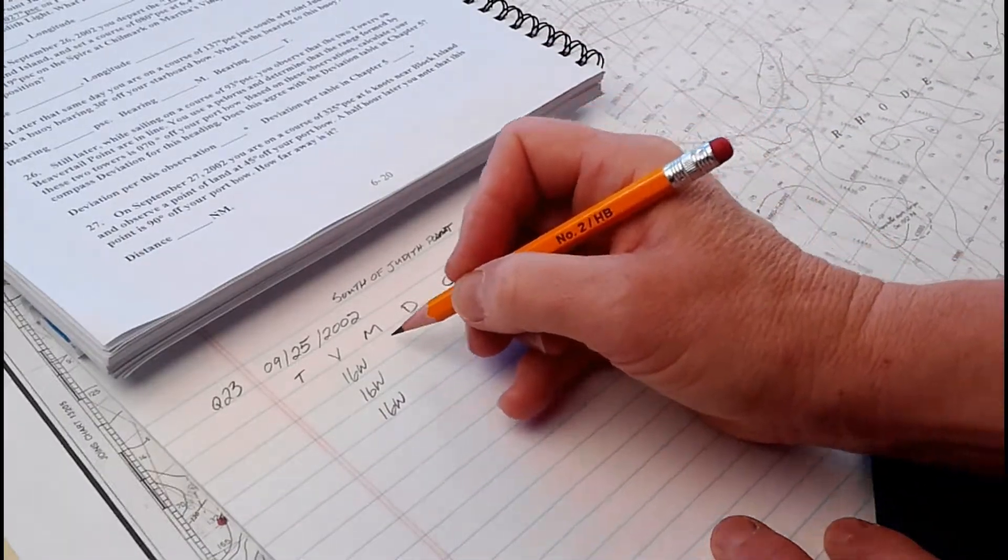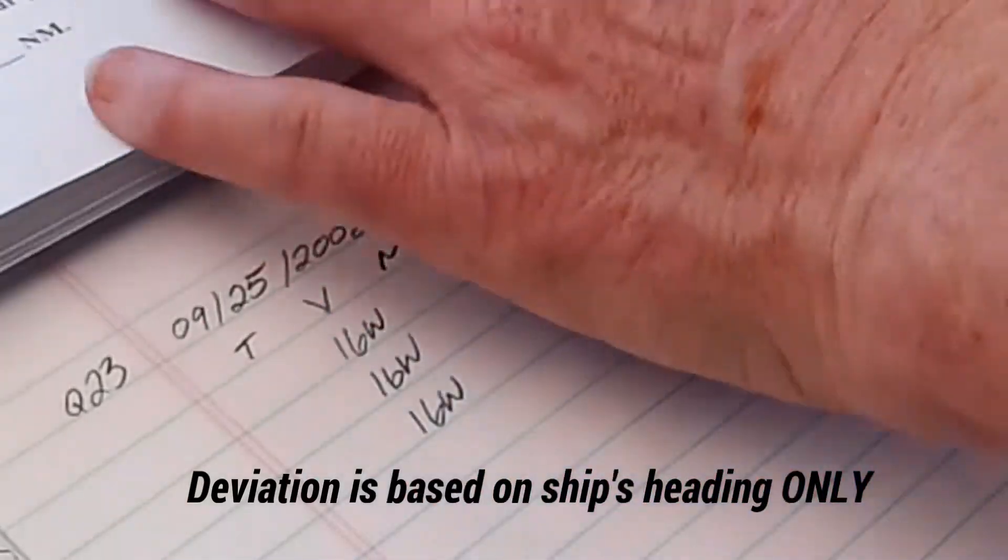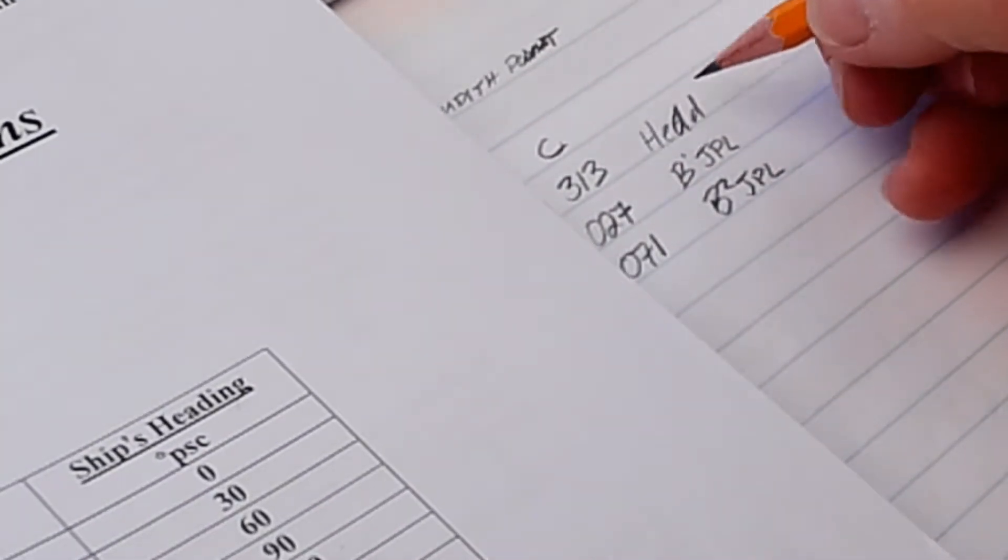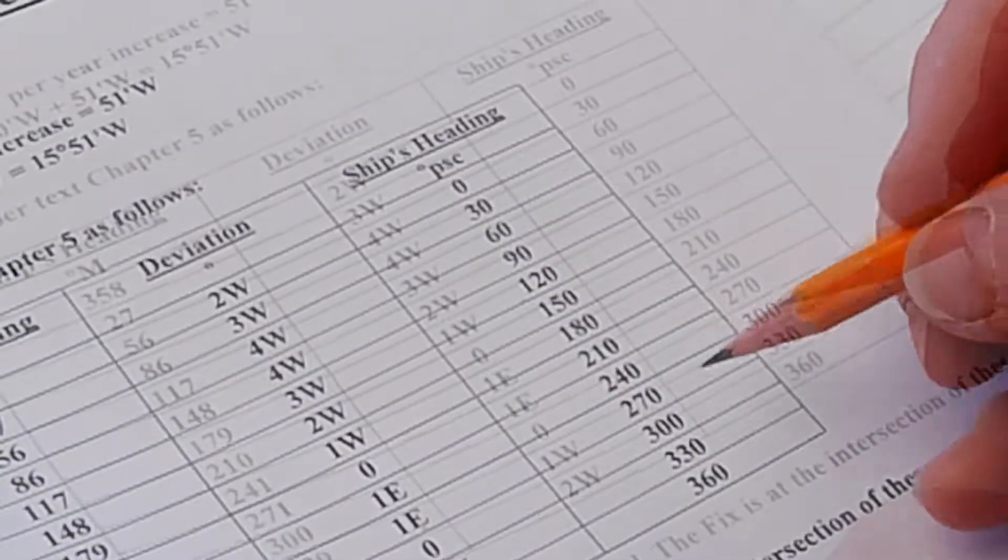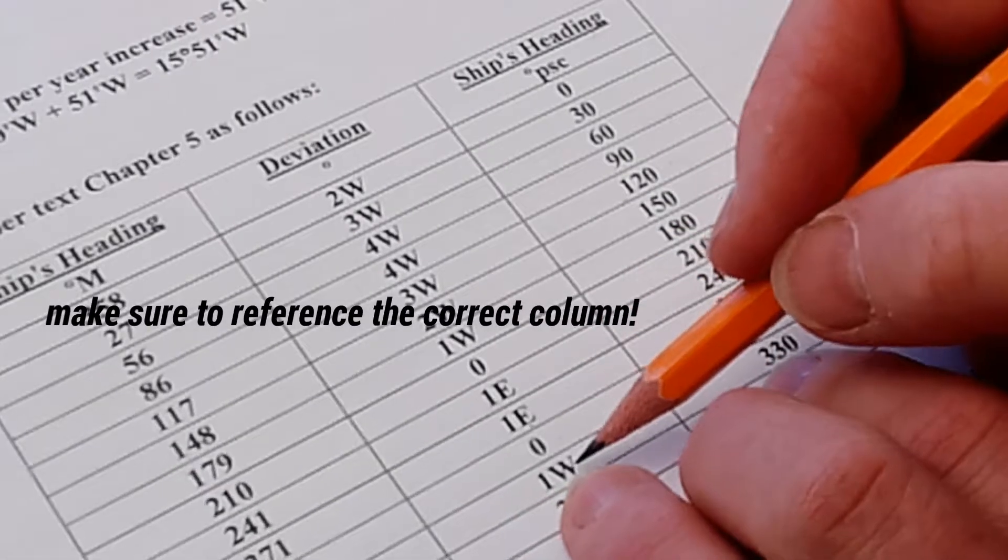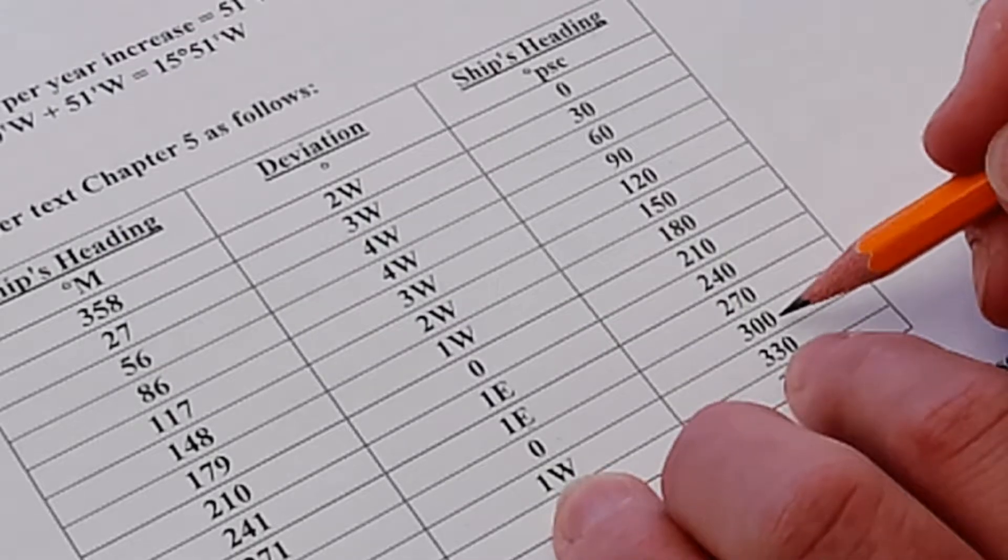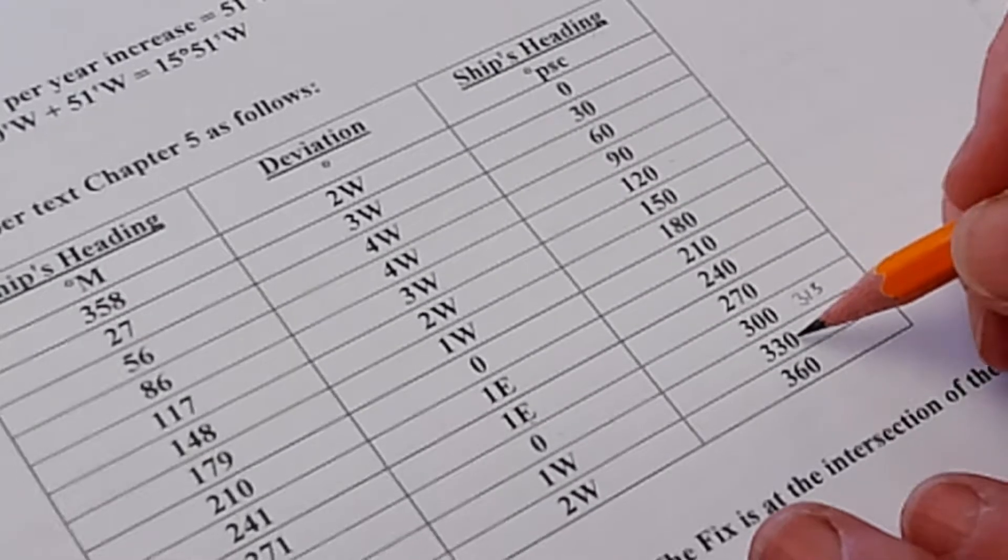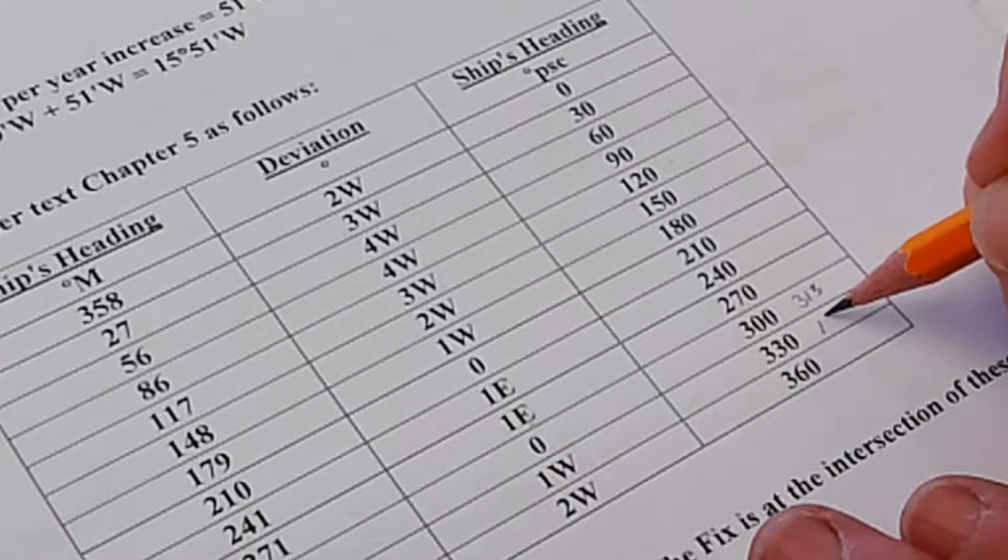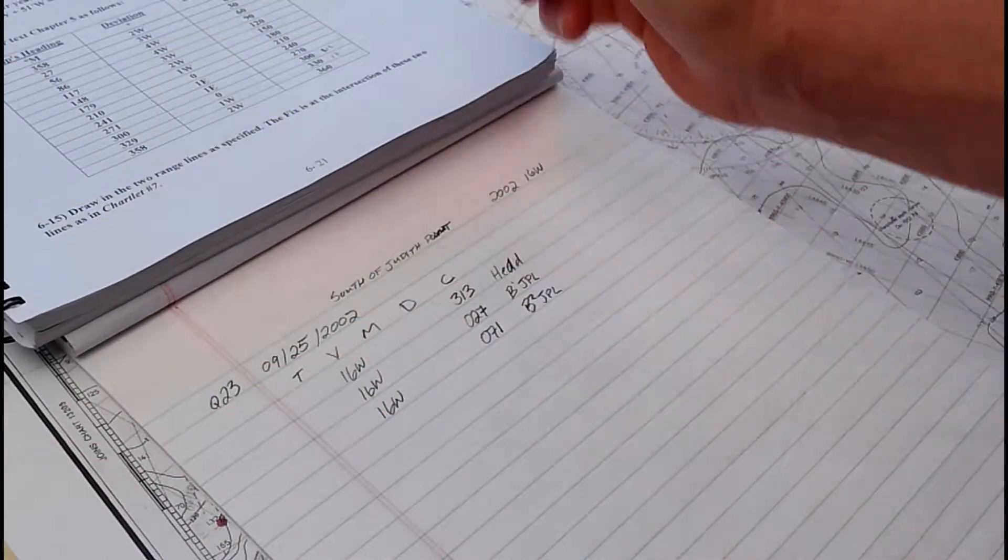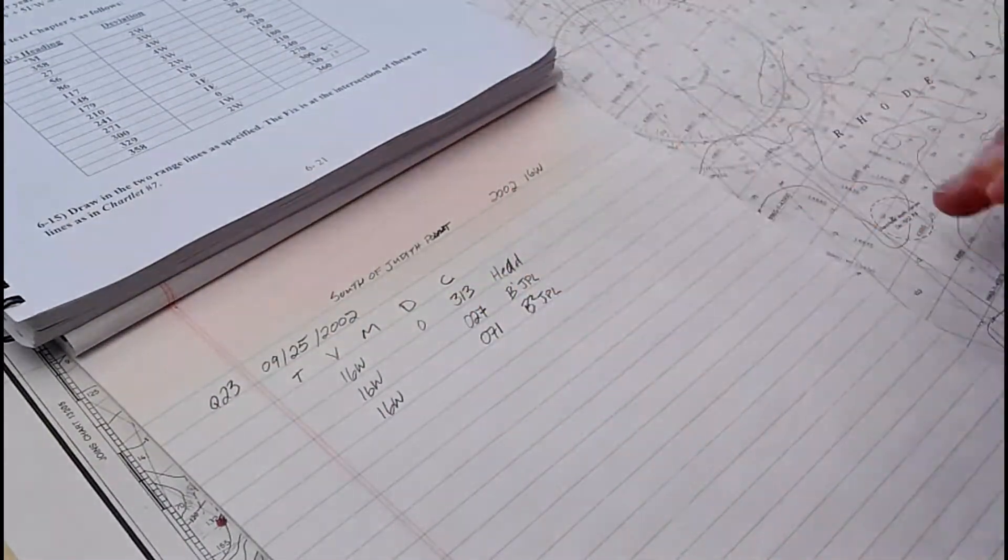For deviation, we have to look at our ship's deviation table. For our course heading of 313, that's between 300 and 330, so somewhere between 0 and 1. 313 is closer to 300 by only 13 degrees, whereas 313 to 330 is 17, so the deviation is 0 degrees.